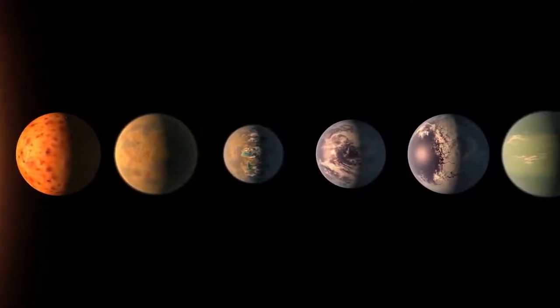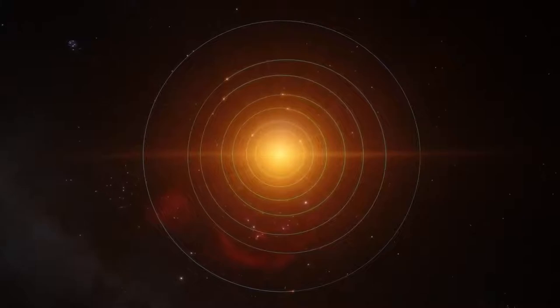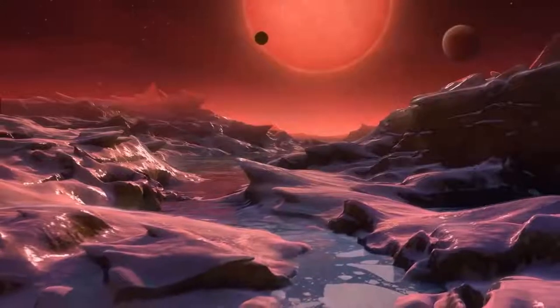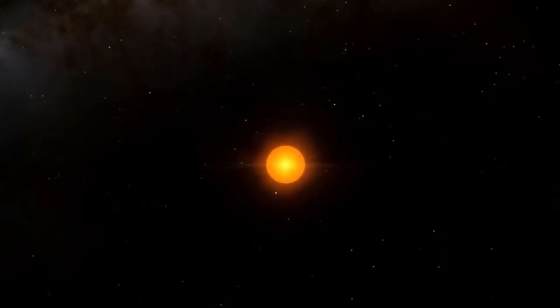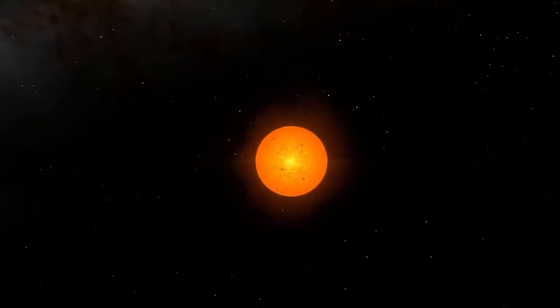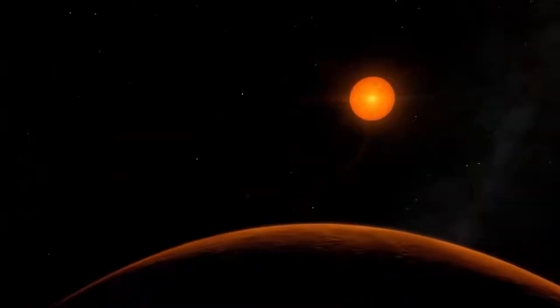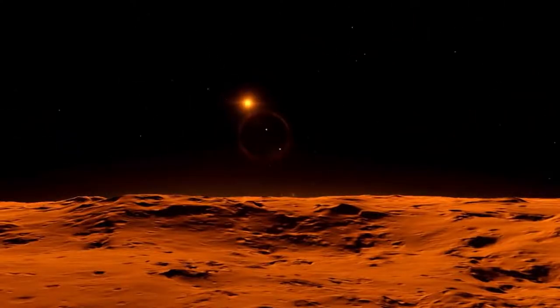These six planets could lie in the optimistic habitable zone and are so close together that if you were standing on the surface of one, you could see the other planets as moons. But the red dwarf star only puts out 0.5% of the energy of our Sun, and so the planets are dark and cold, and the star is about 5.4 and 9.8 billion years old.